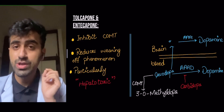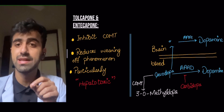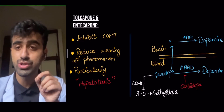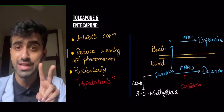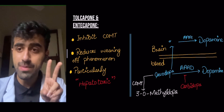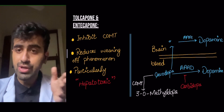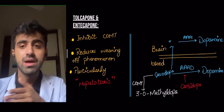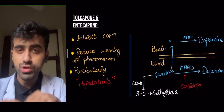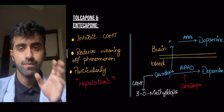An important thing to remember about tolcapone and entacapone is that tolcapone is hepatotoxic — and 'hepatotoxic' also contains two O's. So tolcapone, COMT, 3-O-methyldopa, and hepatotoxic: all of the important concepts in this section essentially contain an 'O.'